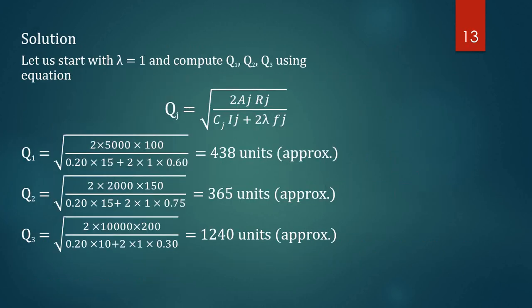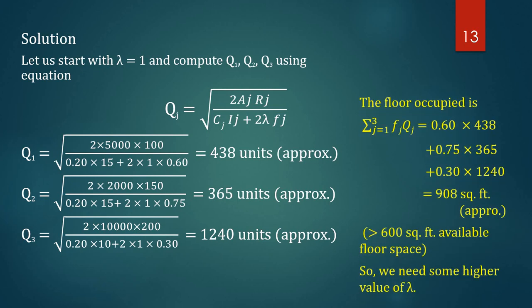Starting with λ = 1, using the formula Qj = sqrt(2·Aj·Rj / (Cj·Ij + 2·λ·fj)), we get Q1 = 438 units, Q2 = 365 units, and Q3 = 1240 units. The floor space occupied is 0.60×438 + 0.75×365 + 0.30×1240, which equals 908 square feet. But we only have 600 square feet available, so we need to use a higher value of λ.